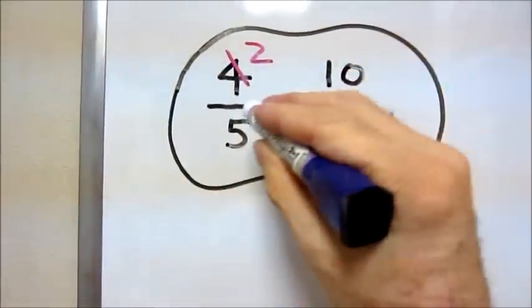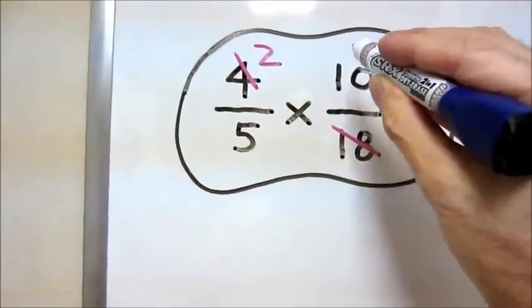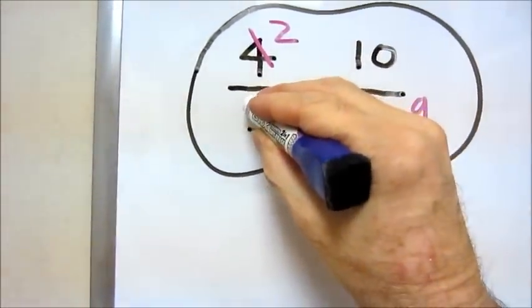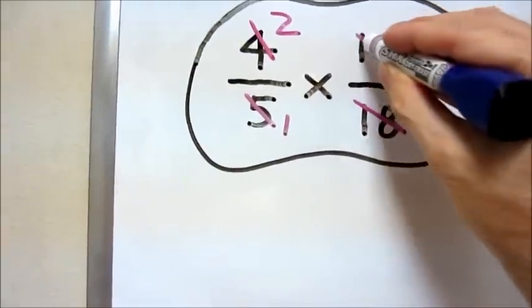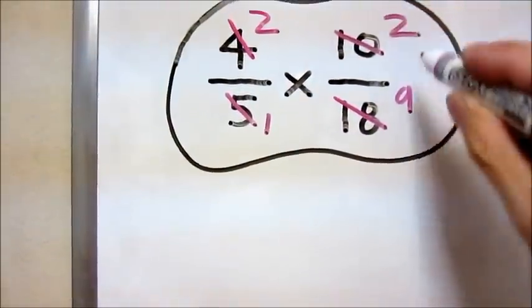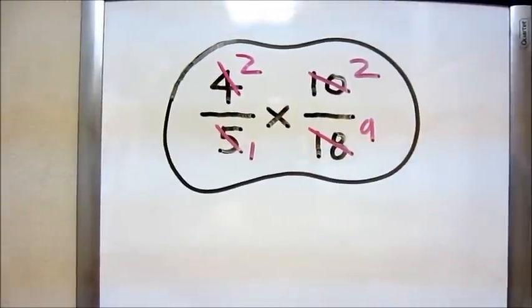Next, 5 is a factor of 10. 5 goes into 10 exactly 2 times. So we divide both by 5, and we get a simplified problem that's much easier to work with.